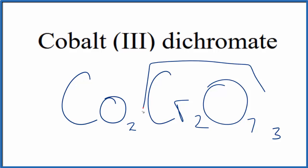And because we have three of these dichromate ions here, each one is 2 minus, we need to put parentheses around the ion. So this is the formula for cobalt 3 dichromate.